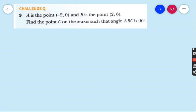Now a challenging question number 9. A is the point (−2, 0) and B is the point (2, 6). Find the point C on the x-axis such that angle ABC is 90 degrees. Since C is on the x-axis, the y-coordinate of C is always zero, so let the coordinates of C be (x, 0).